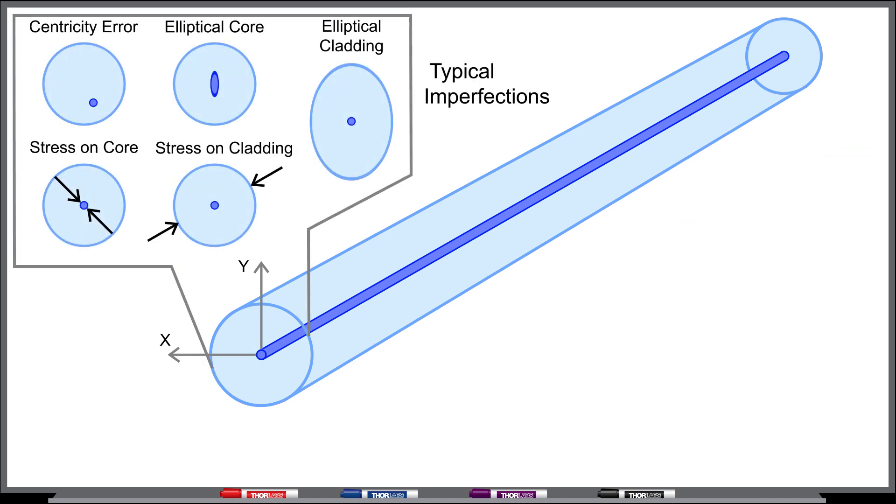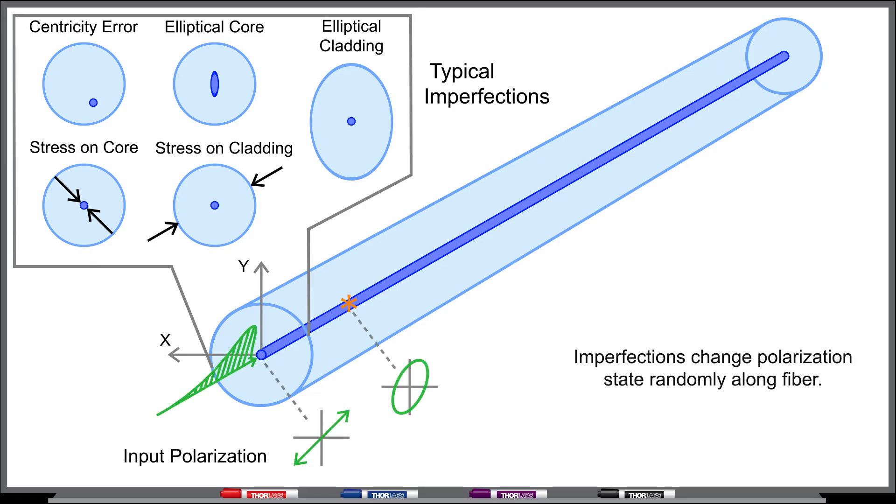Unfortunately, there are always small imperfections and bends along the fiber that can randomly change the light's polarization state and orientation as it travels through the fiber, making the output polarization state unpredictable.